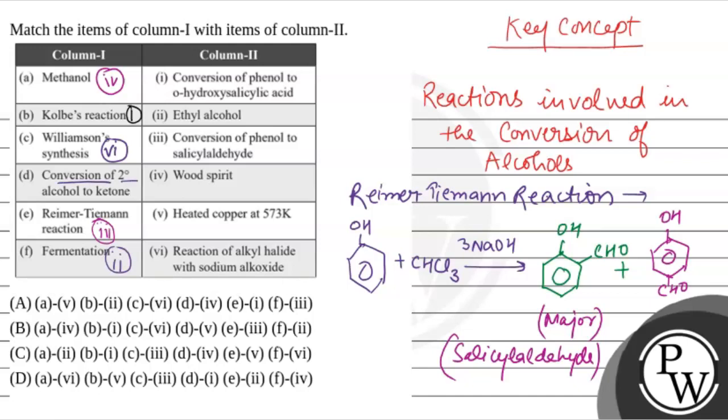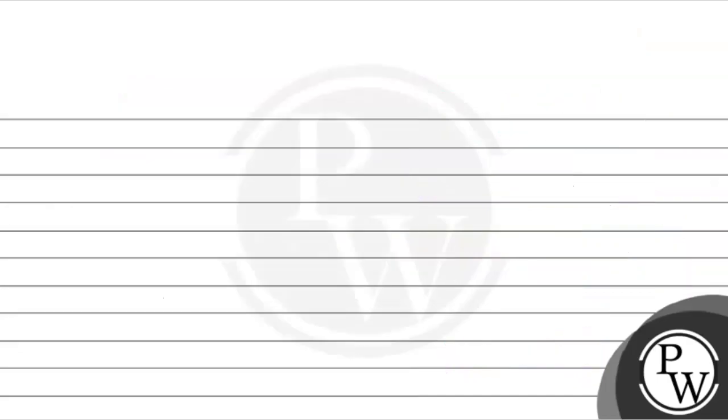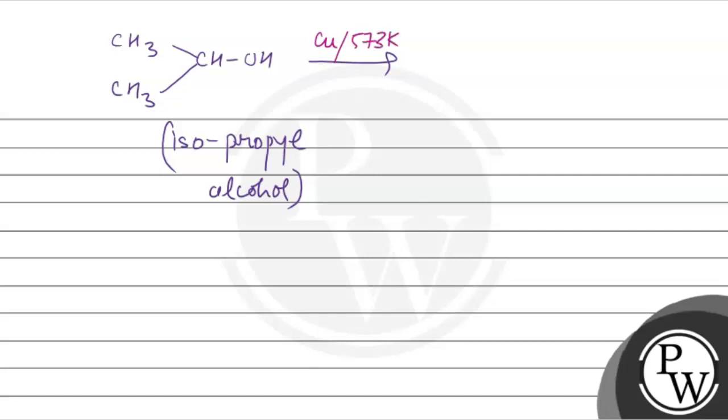Now the last one is conversion of 2 degree alcohol to ketone. CH3-CH(OH)-CH3, this is isopropyl alcohol. Now the conversion of this isopropyl alcohol with heated copper at 573K. Here the product is CH3-CO-CH3 that is acetone. Acetone which is a ketone, plus H2.